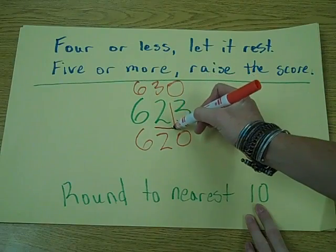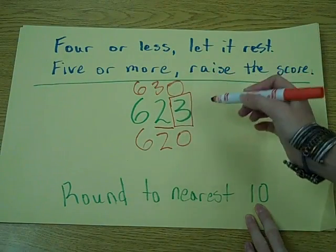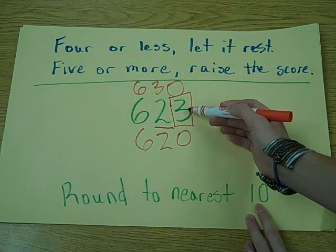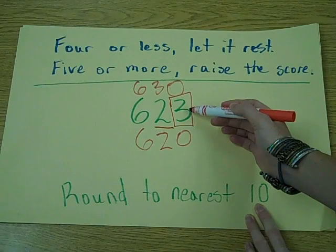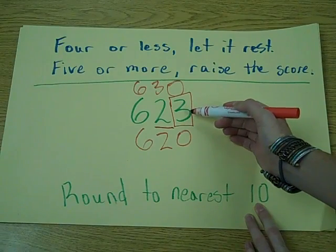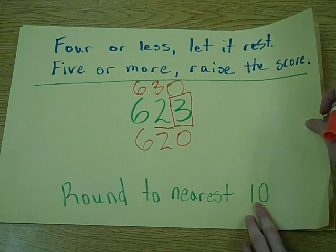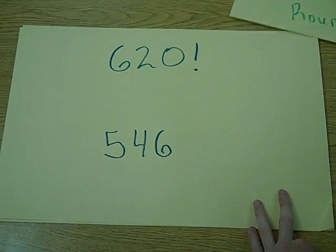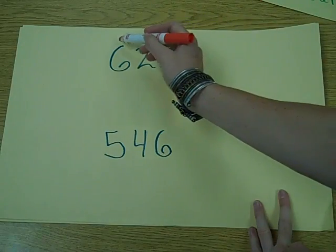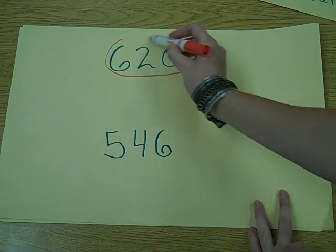Then we look at the ones place. Is it four or less, let it rest, or five or more, raise the score? Three is less than four, so let it rest and round down to six hundred twenty.